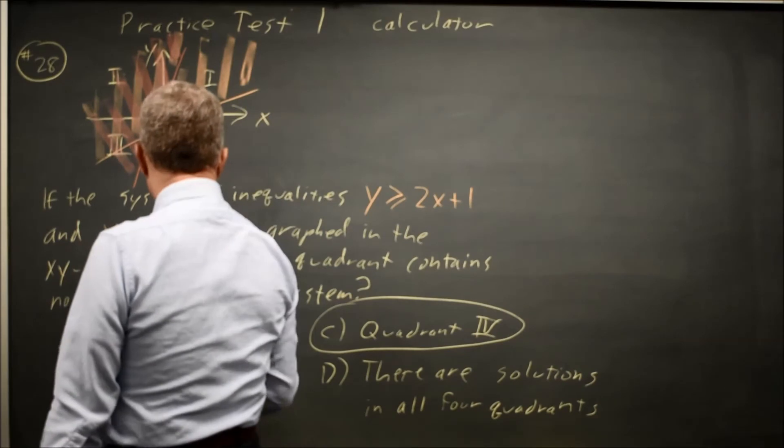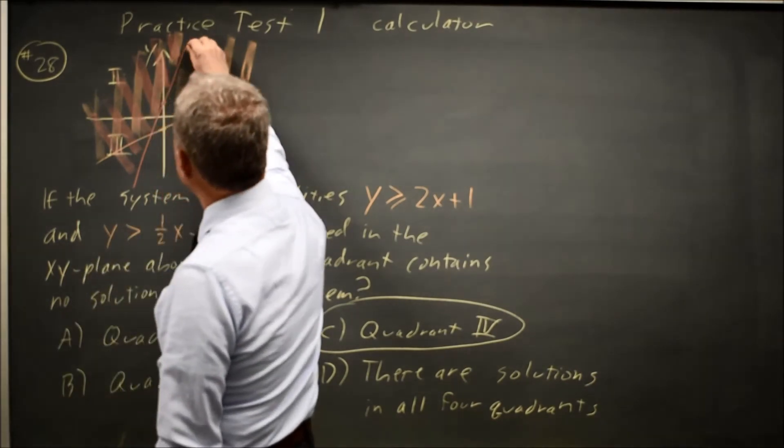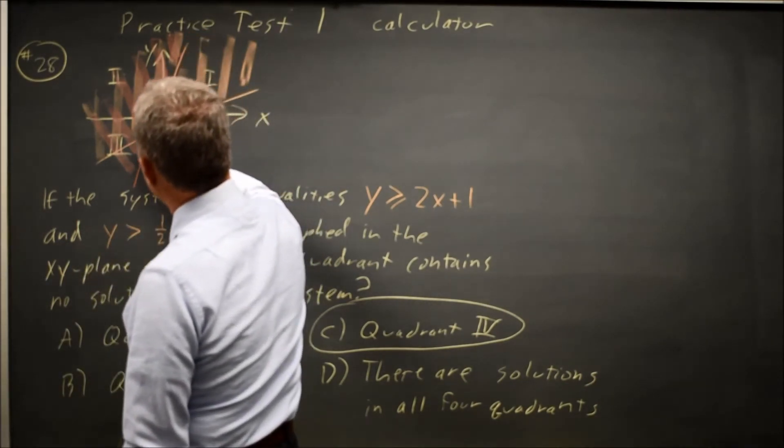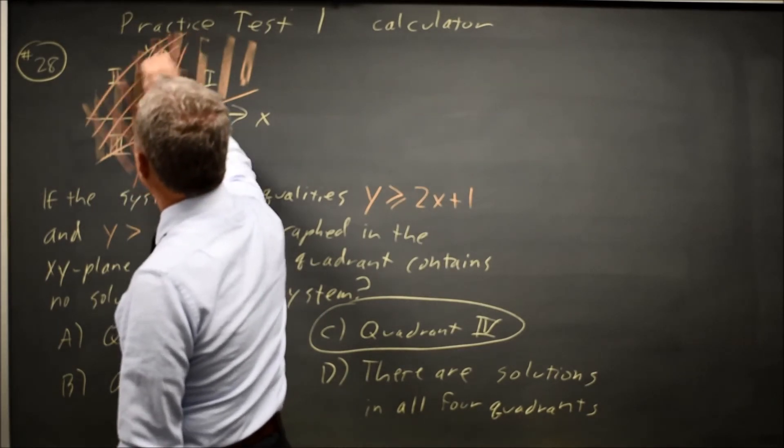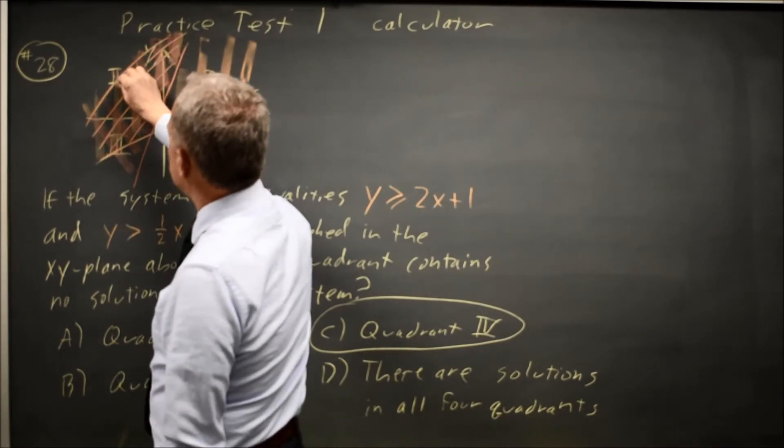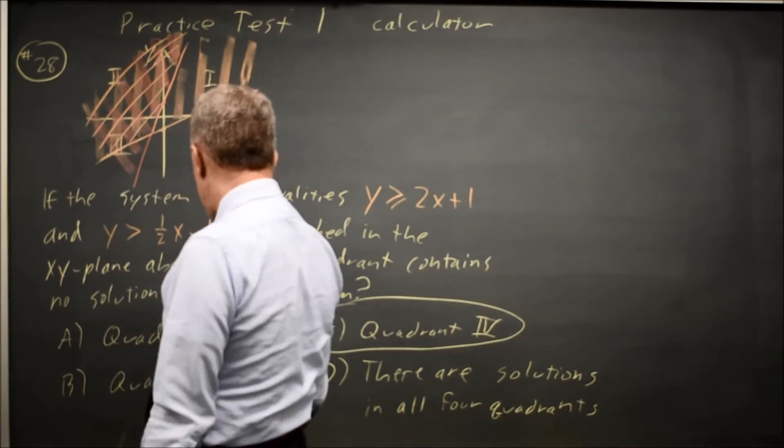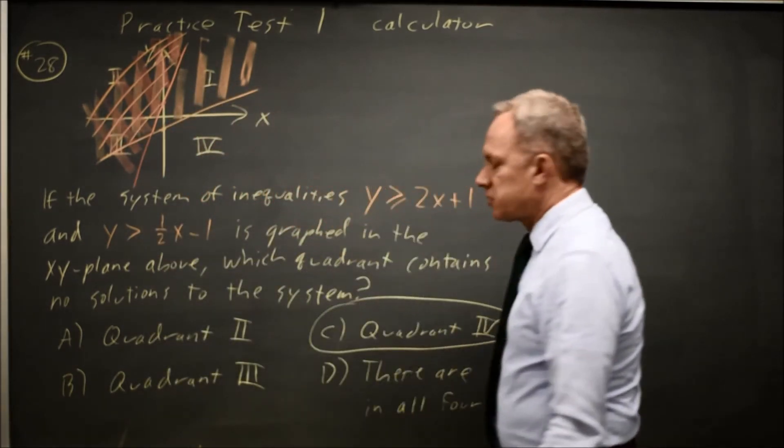So the solution to the system is the region above this line and this line here that I shaded both times. And that has points in quadrants 1, 2, and 3, but not in quadrant 4. So the correct answer is quadrant 4.